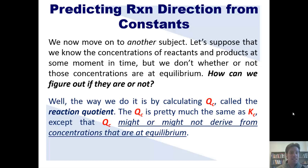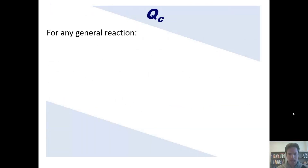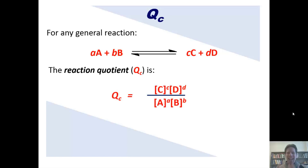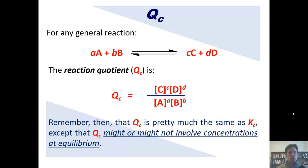QC is pretty much exactly the same as KC, except that QC may or may not derive from concentrations that are at equilibrium. For any general reaction, QC, the reaction quotient, is equal to this expression. You should note that QC looks exactly the same as KC, except that these concentrations — C, D, A, and B — might or might not be at equilibrium.